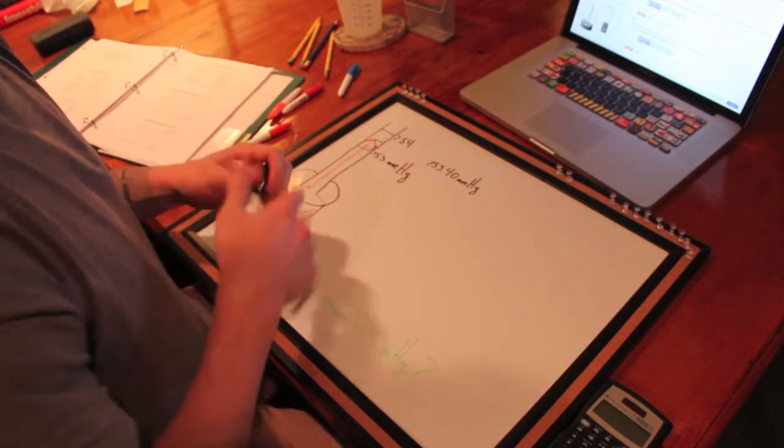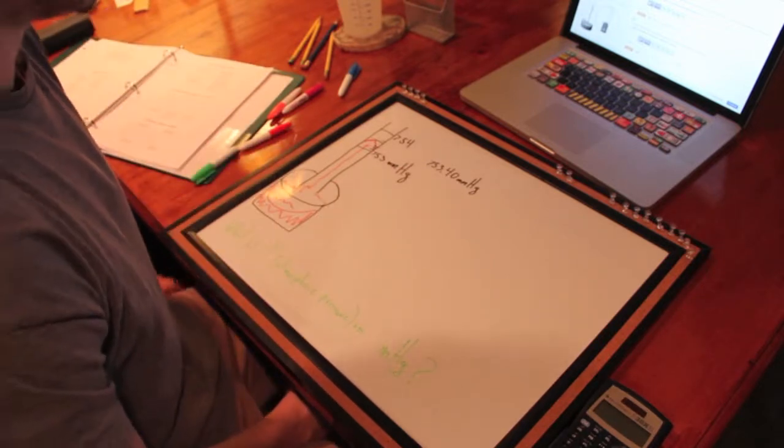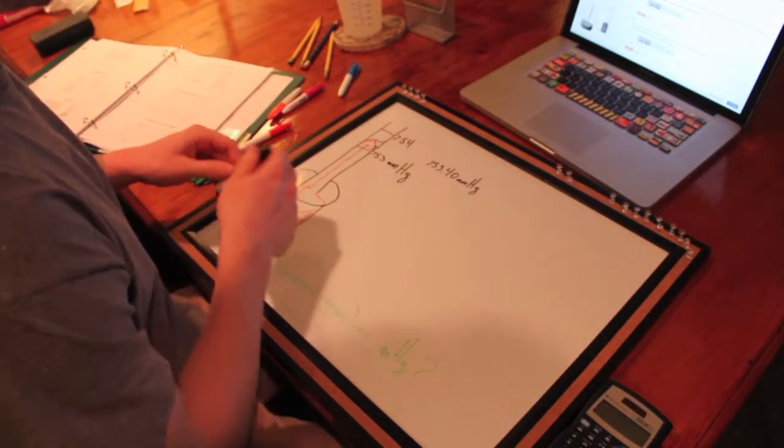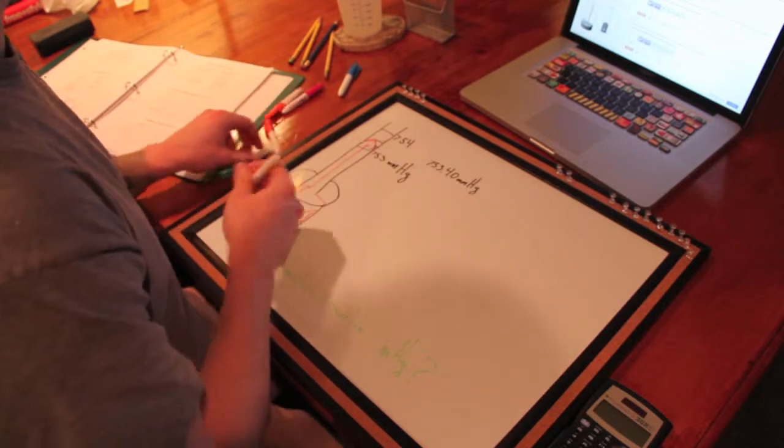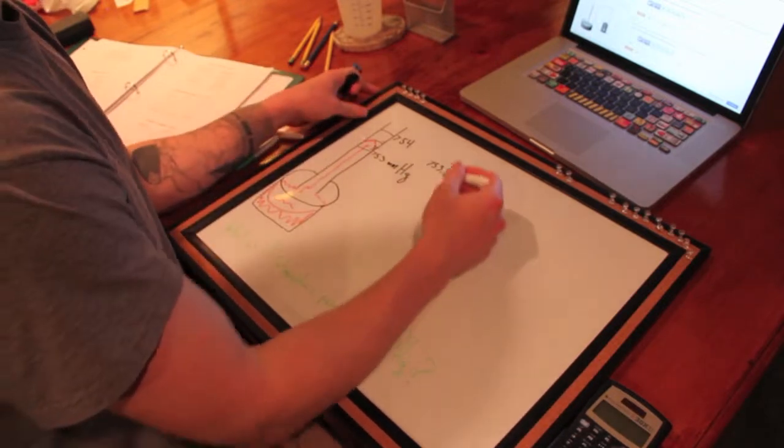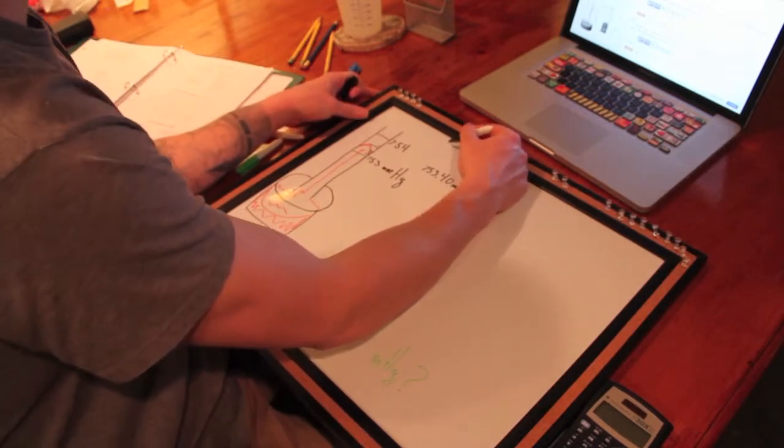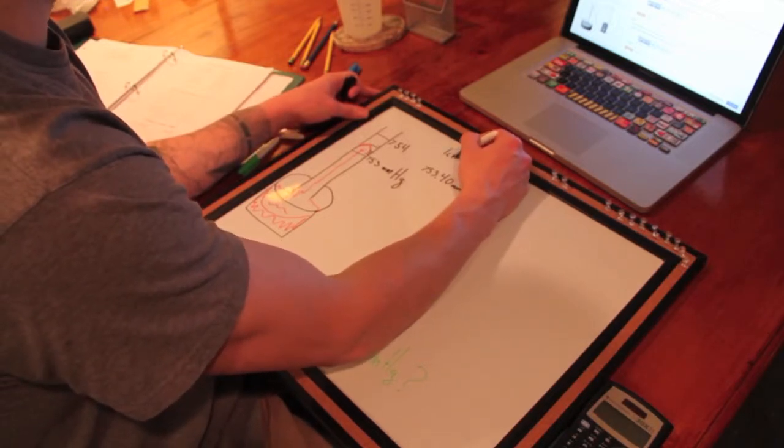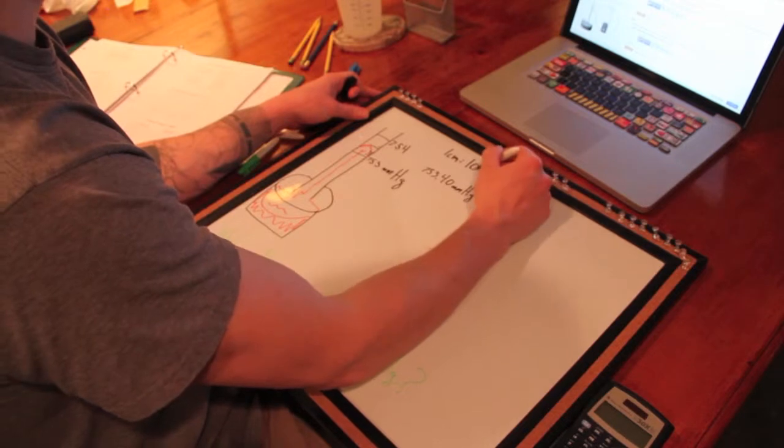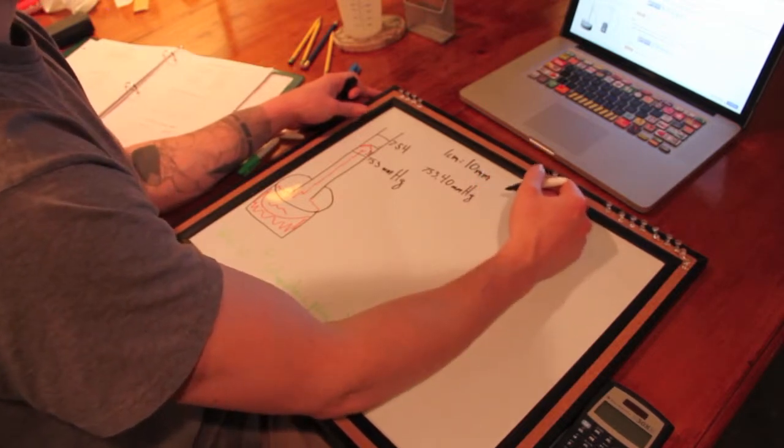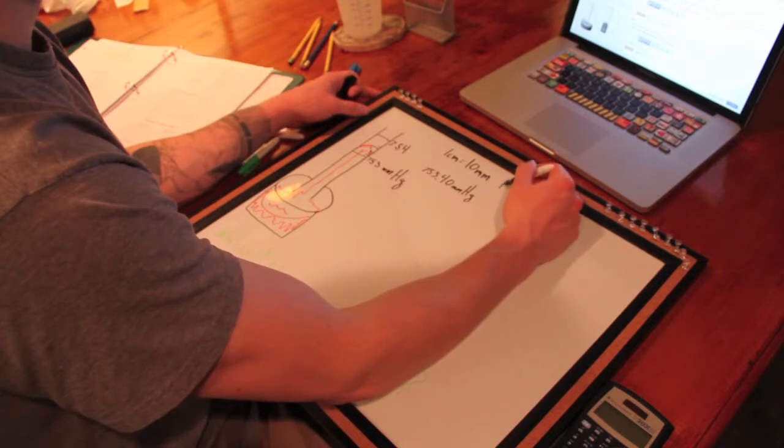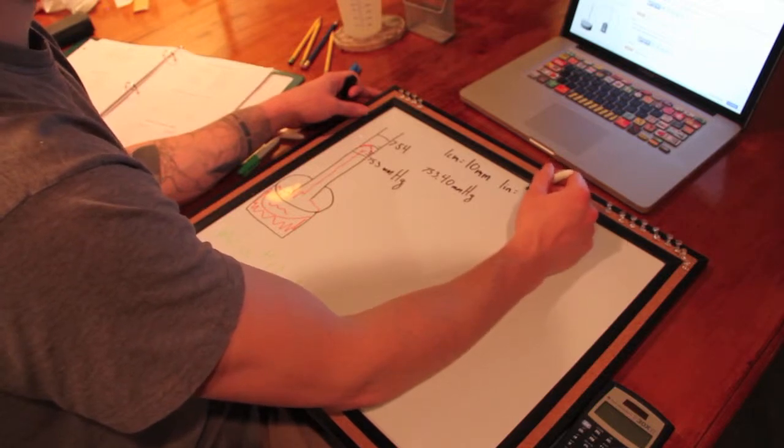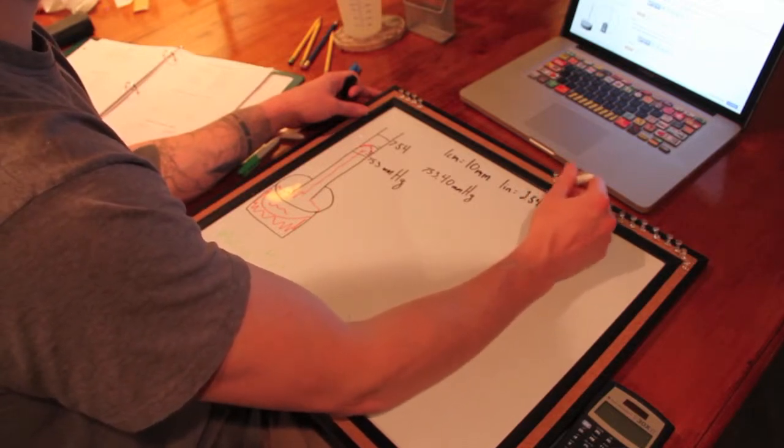So we know that we have 753.40 millimeters of mercury, and we have some conversions that we need to know that are given to us. I'll just write those up at top so they're out of the way but you can find them when you need them. One centimeter is equal to 10 millimeters. One inch is equal to 2.54 centimeters.